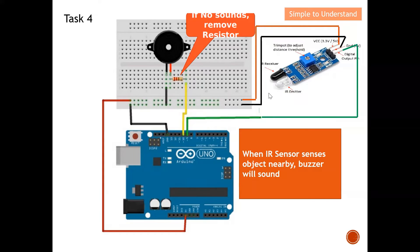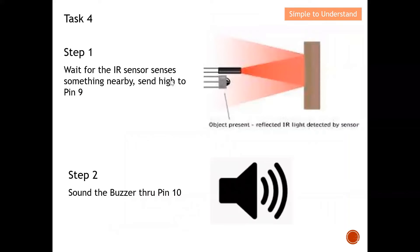Let's break the task into two steps. Step one: reading from the IR sensor — if something is nearby, I should pick up the signal at pin 9. Step two: after detecting something near, I put 5V at pin 10 to sound the buzzer. This is a straightforward Task 4.